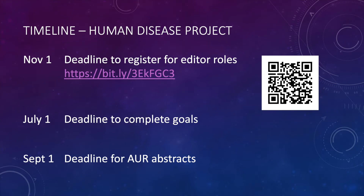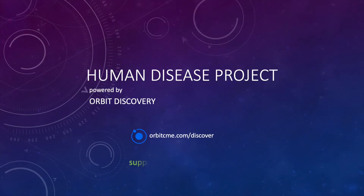The deadline to register for editor, associate editor, and participant roles is November 1. This QR code takes you to the registration link. The deadline to complete collaborator requirements is July 1, and the deadline to be included in AUR abstracts is September 1. For questions, email support at orbitcme.com.